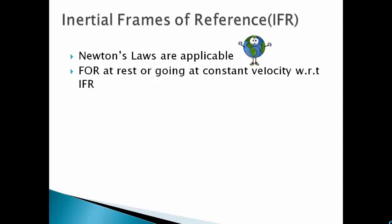Frame of reference at rest or going at constant velocity with respect to inertial frame of reference is also called as inertial frame of reference. So, any object which is at rest or it is going with a constant velocity with respect to Earth, then such a frame of reference will also be called as inertial frame of reference.